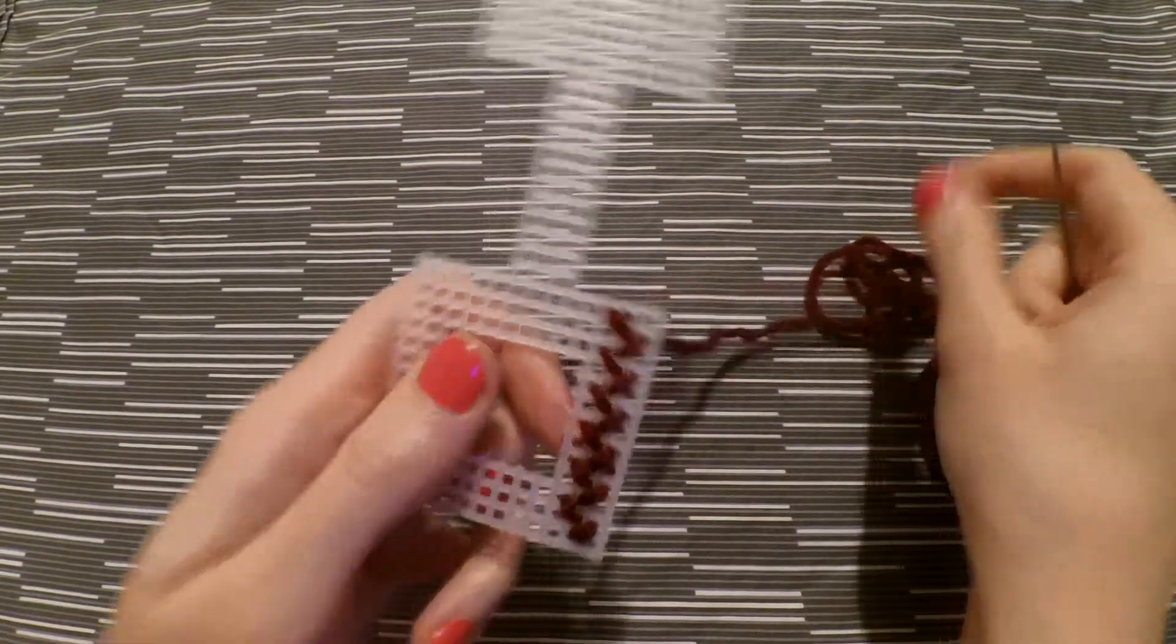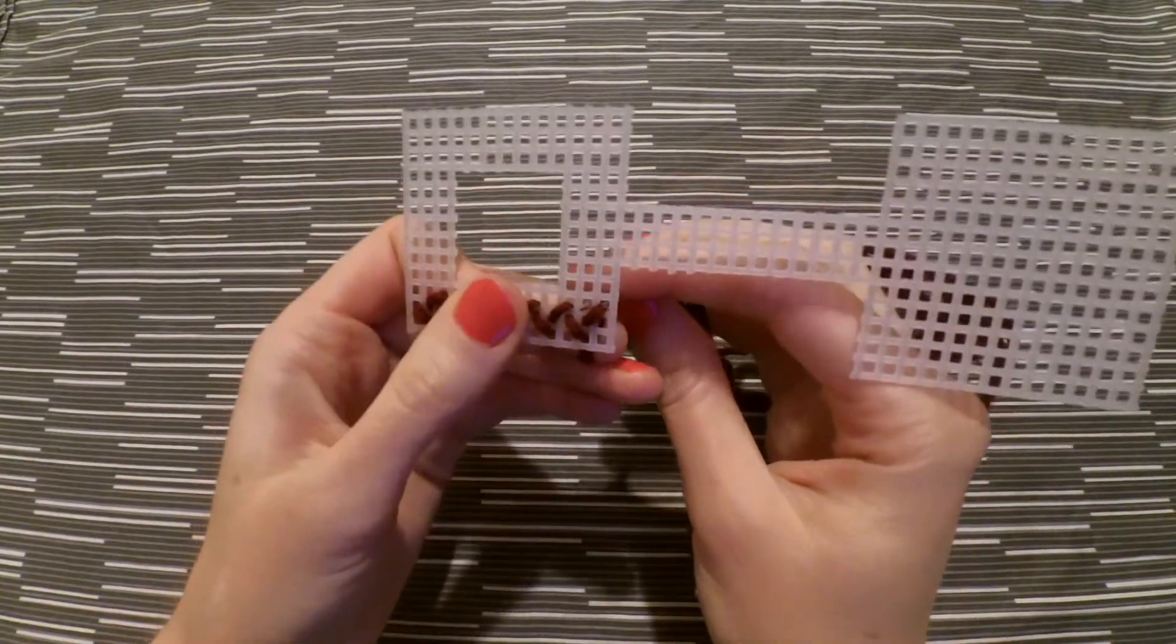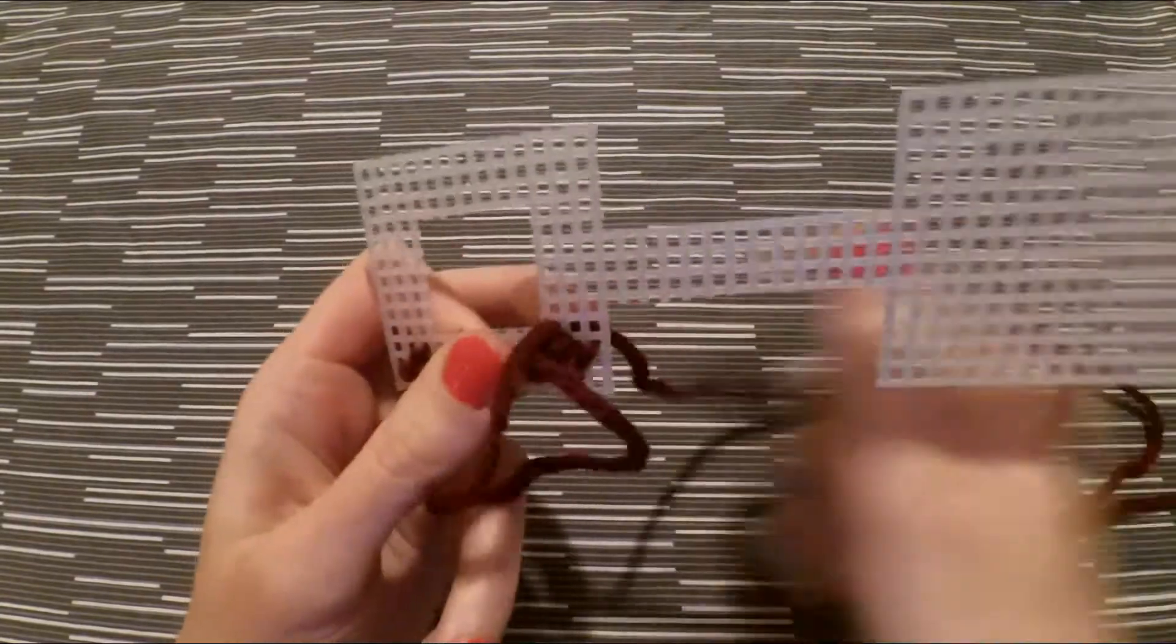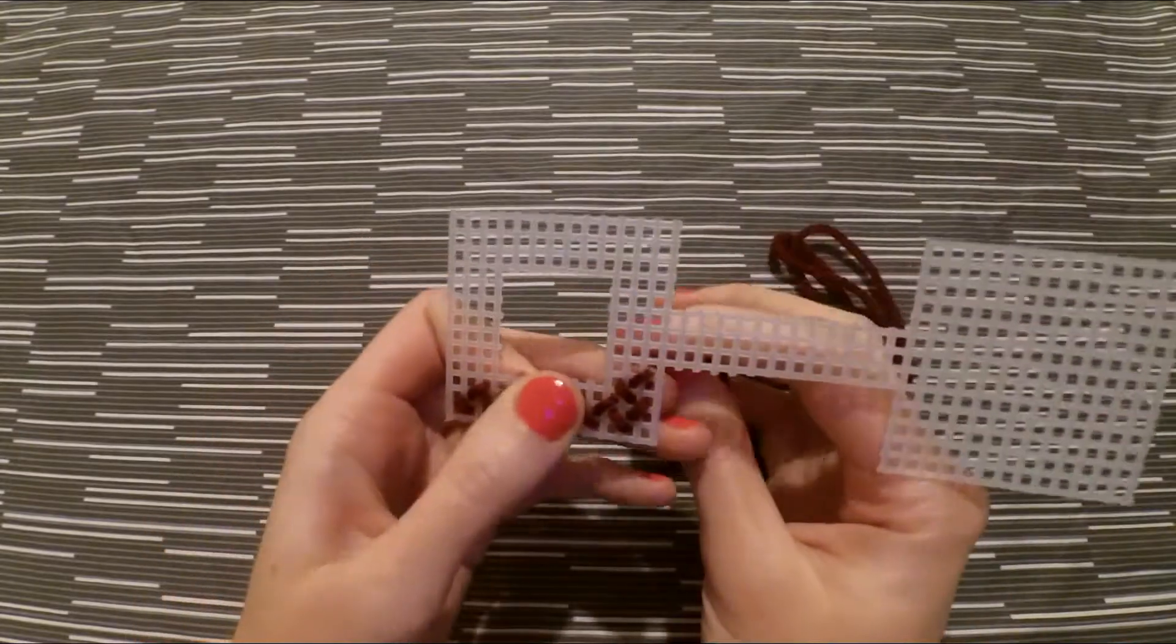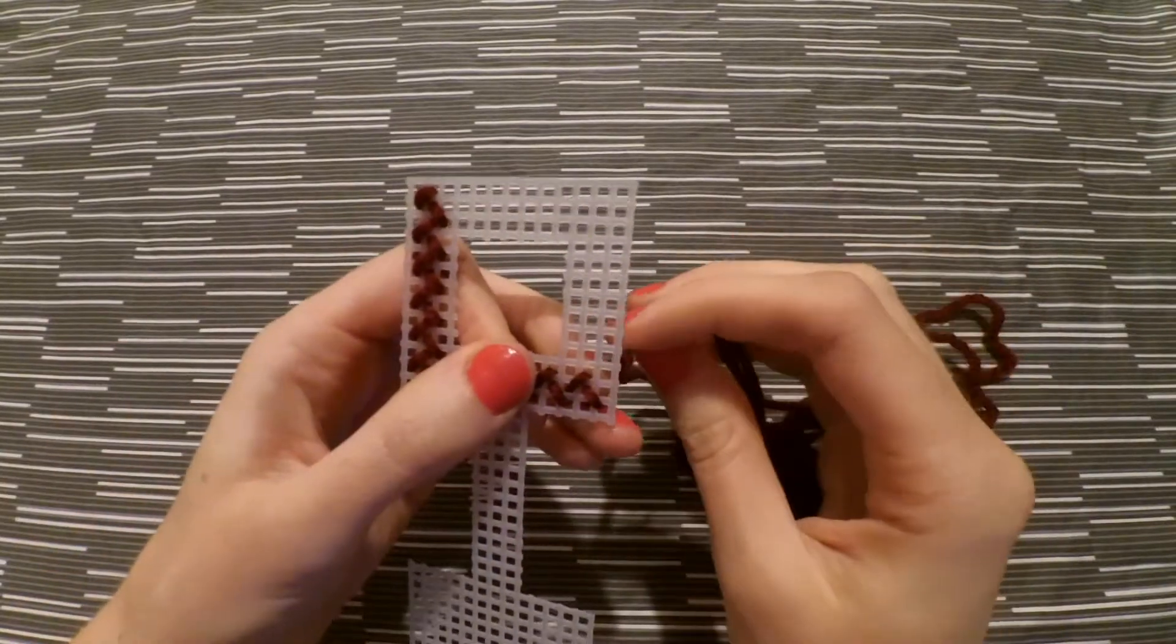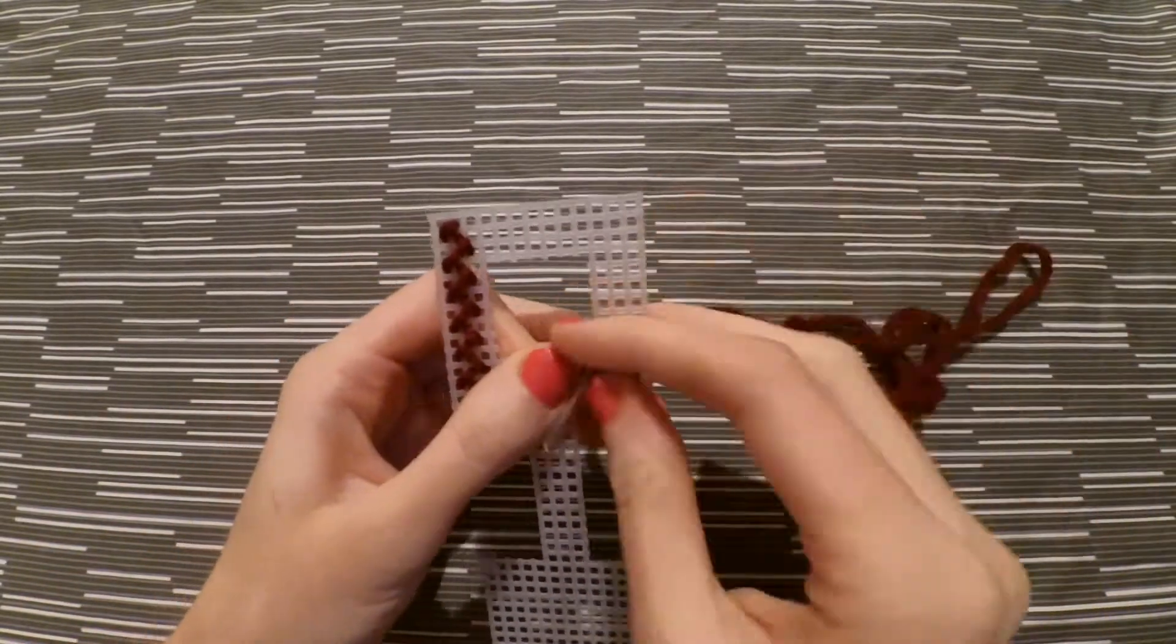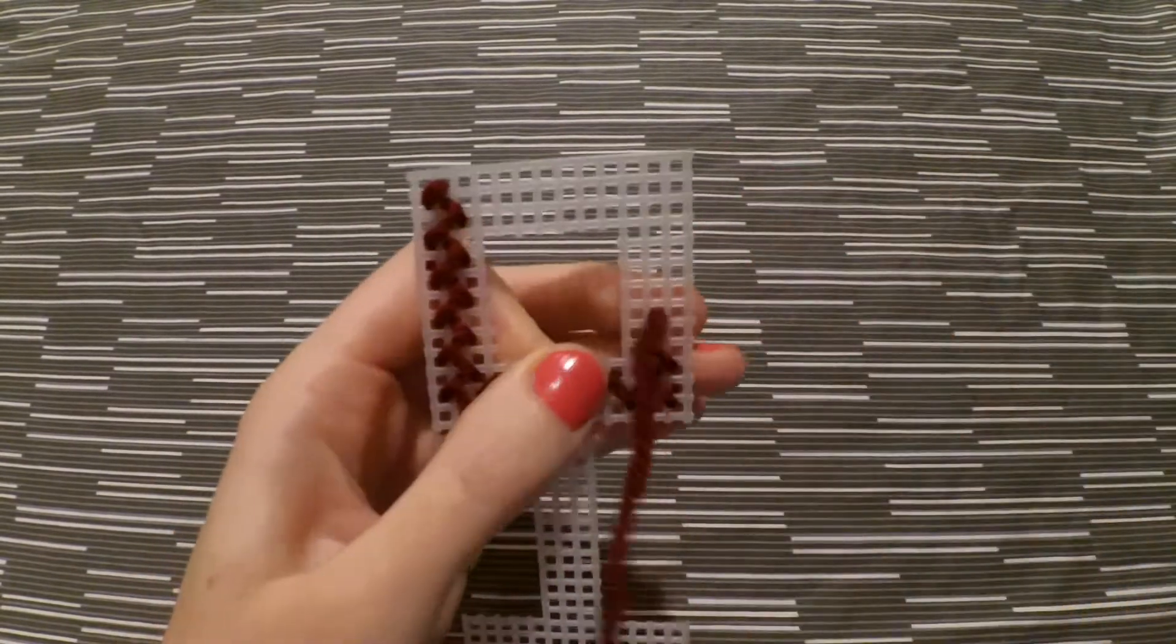When you get to the first corner just turn the canvas clockwise and continue the same pattern. Now when you get to the second corner it's a little bit trickier because you'll have to switch direction. Just make sure that you're leaving a space in between each stitch as this is where the next color is going to go.